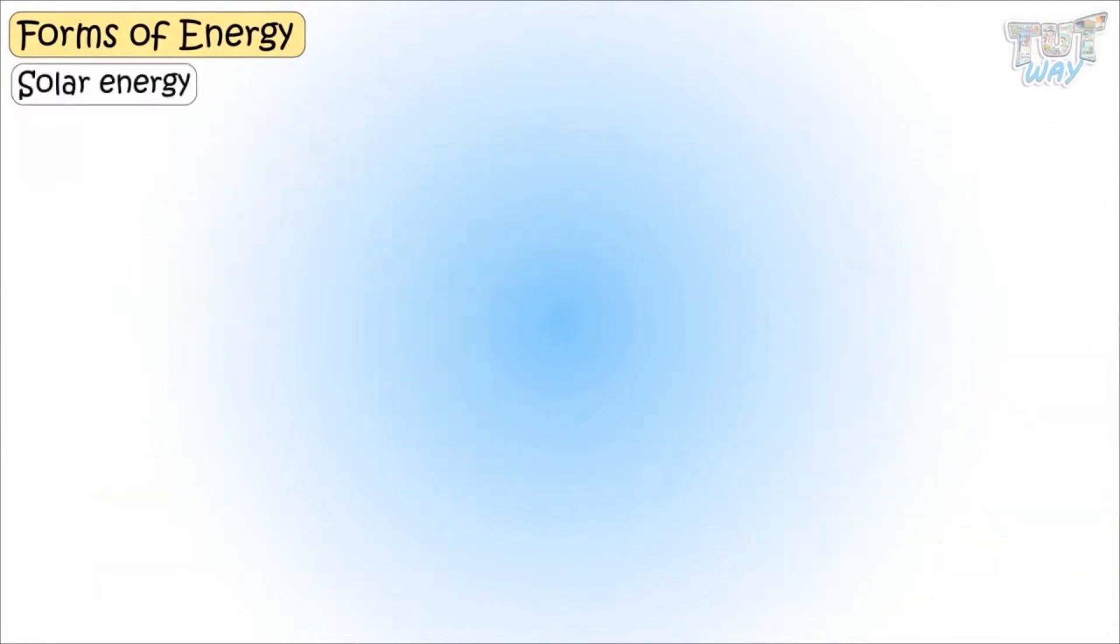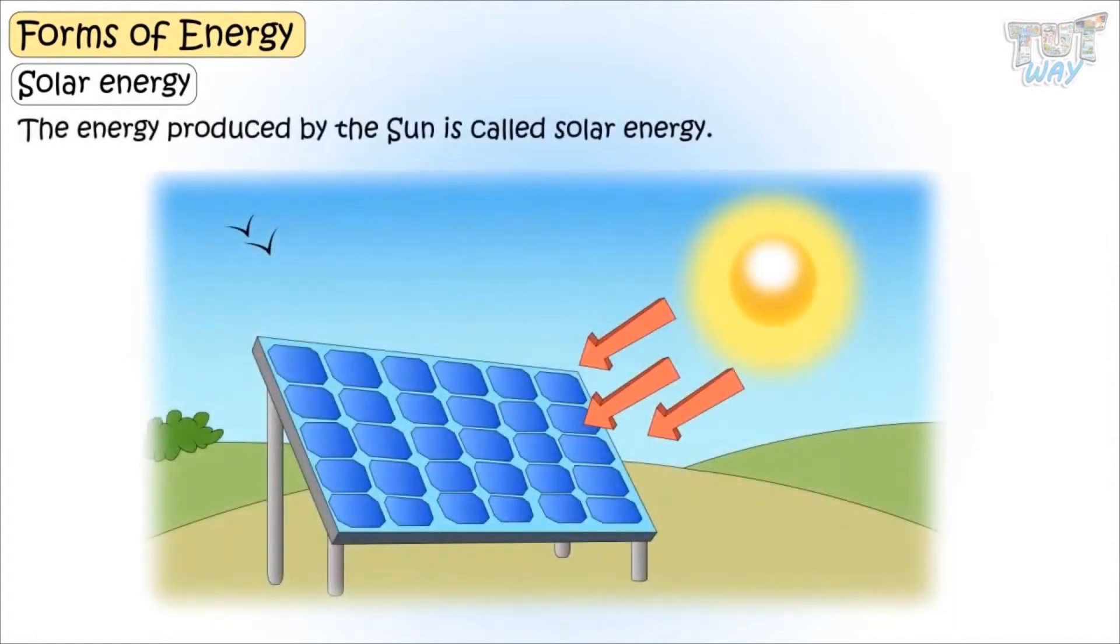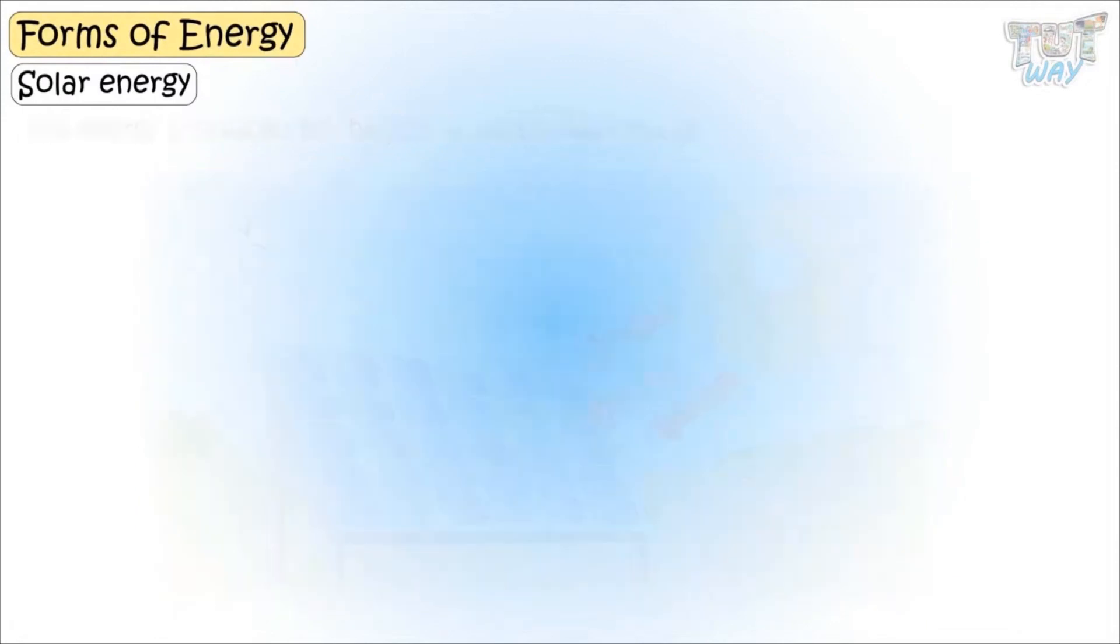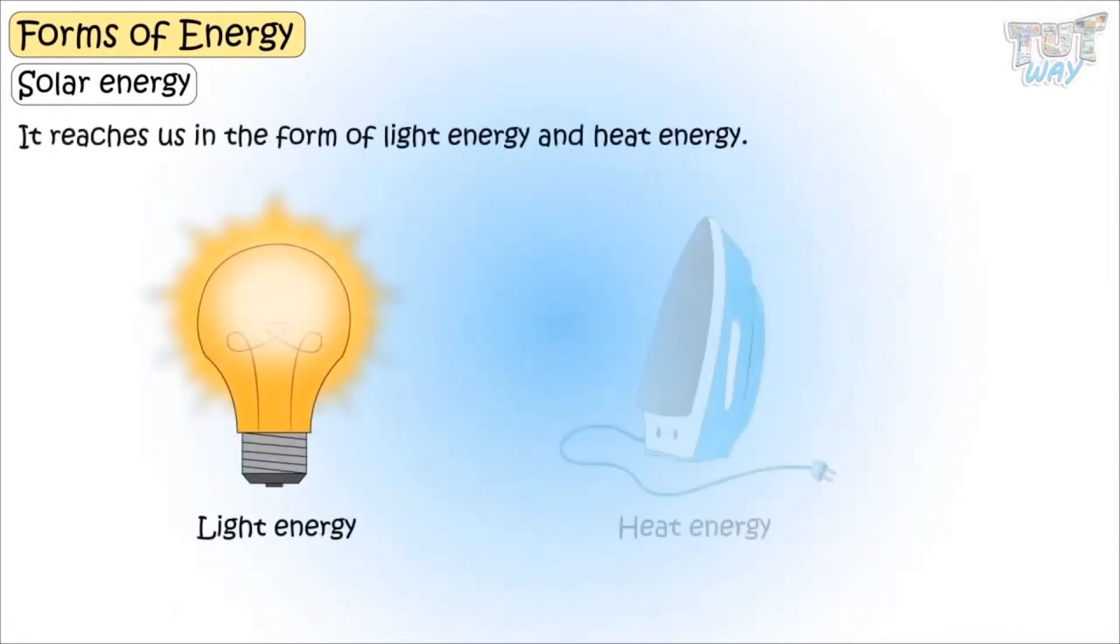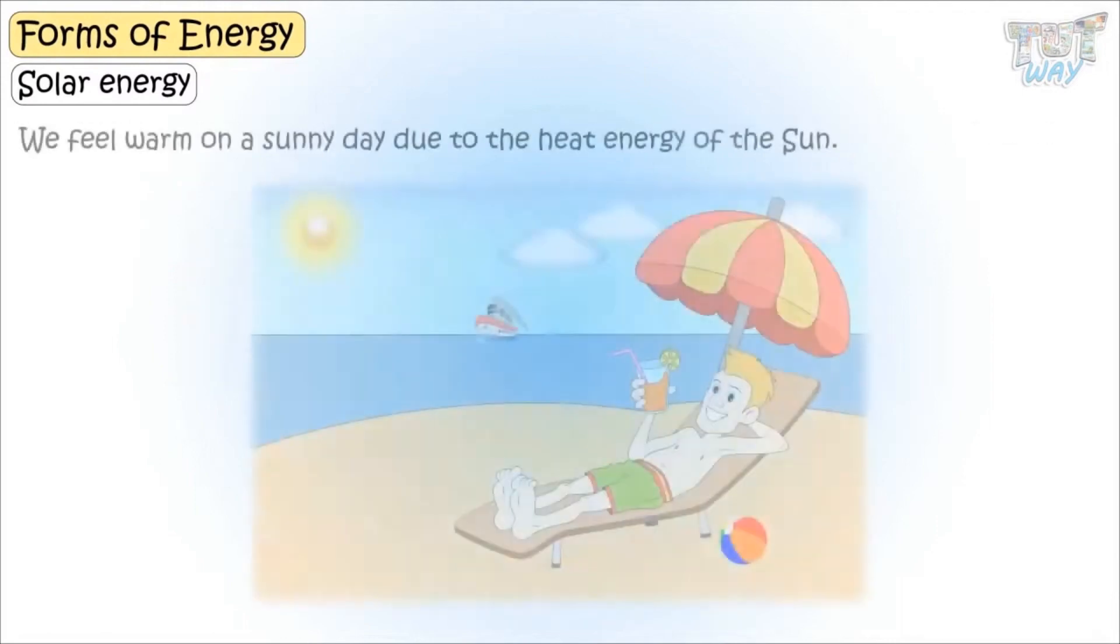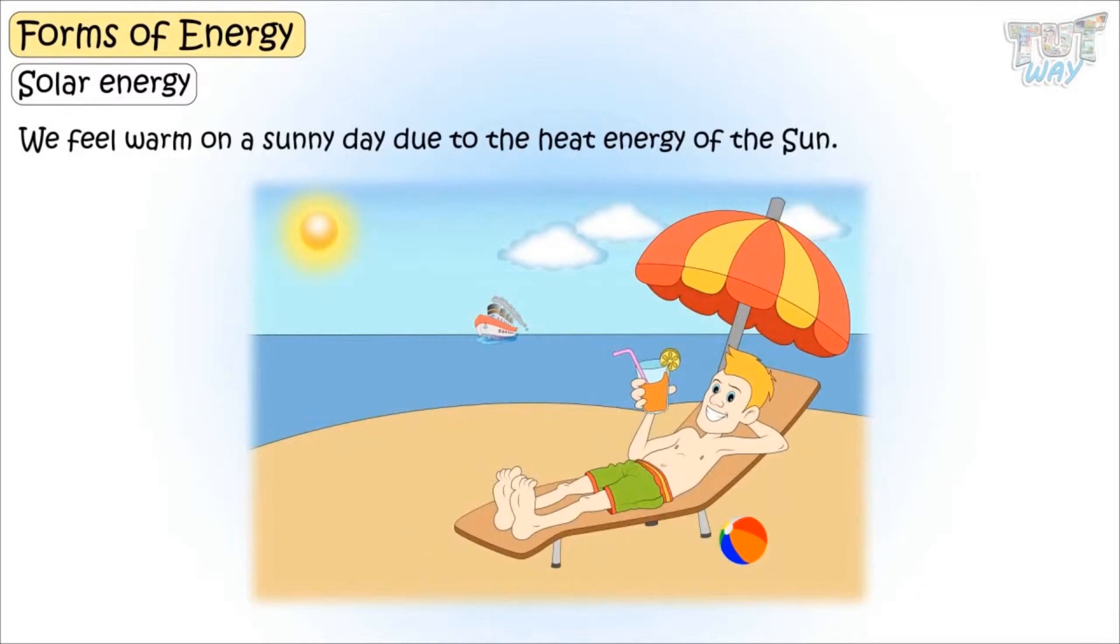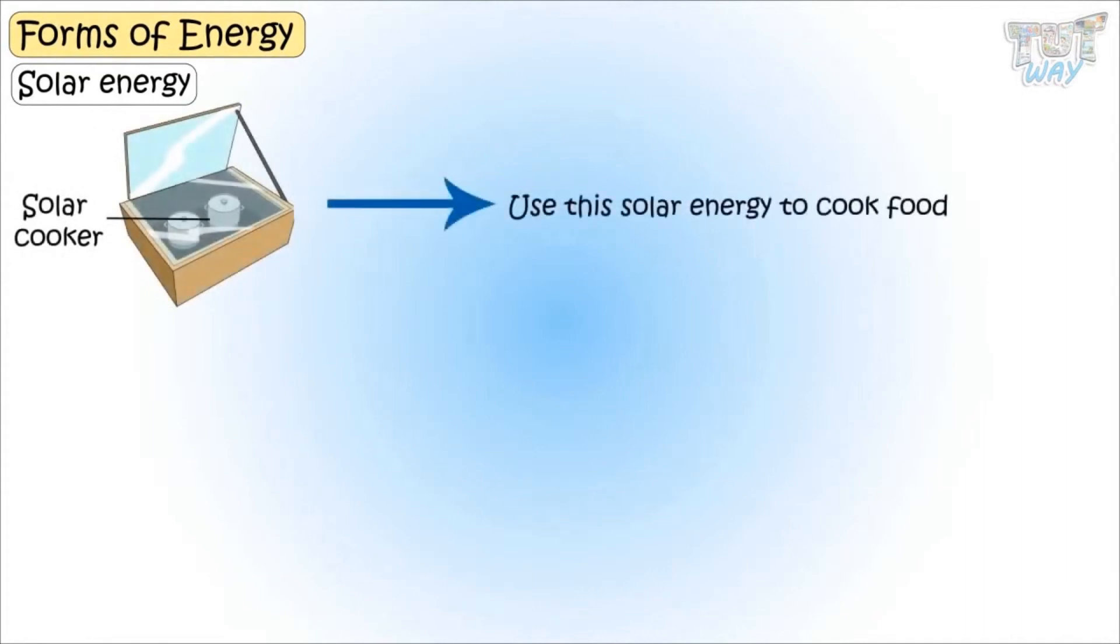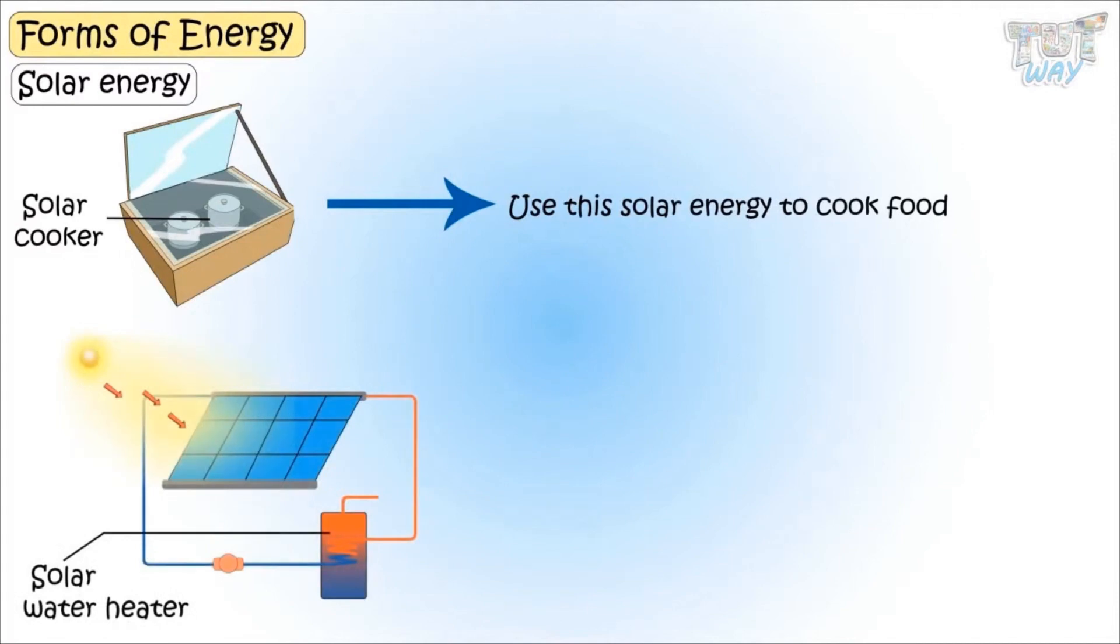Now let's learn about solar energy. The energy produced by the sun is called solar energy. It reaches us in the form of light energy and heat energy. Light energy is used by the plants to make their own food with the process called photosynthesis. We feel warm on a sunny day due to the heat energy of the sun. Solar cookers use this solar energy to cook food. Solar water heaters use this solar energy to heat water.